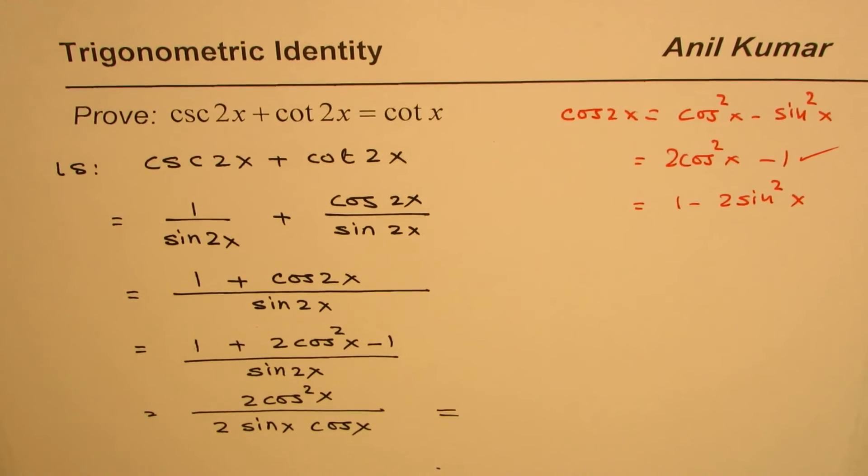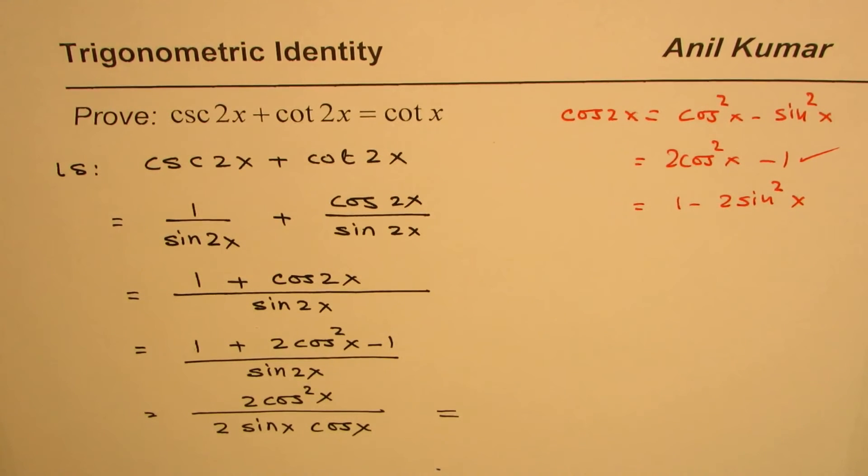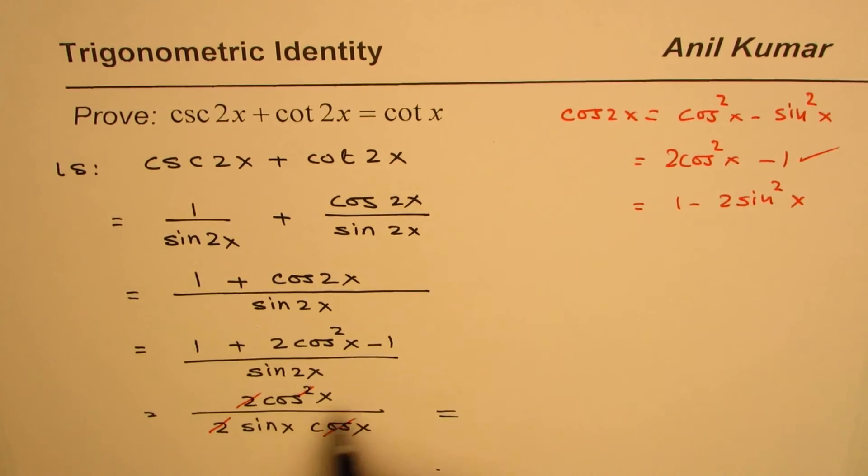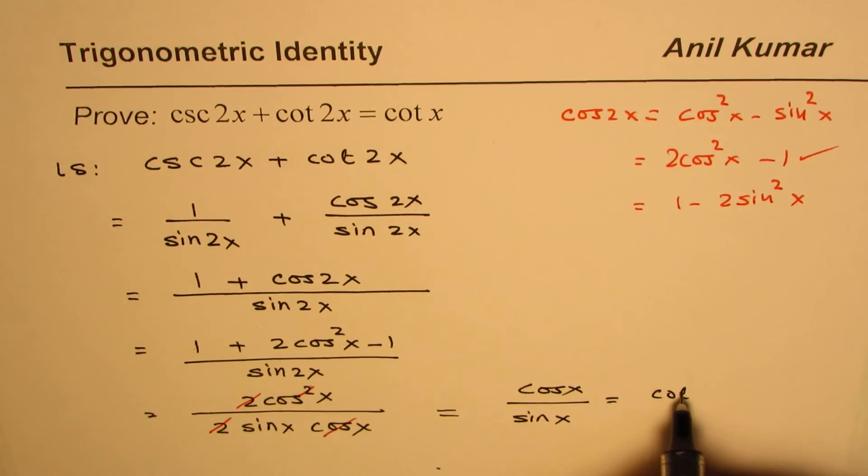Now does that give you some idea? Oh yeah. Cosine squared x, cosine 2x. One of the cosines can cancel out, and 2 and 2 also cancel out. So you can cancel 2 with 2, this with this. And what do you get? You get cosine x over sine x, which is cotangent x.